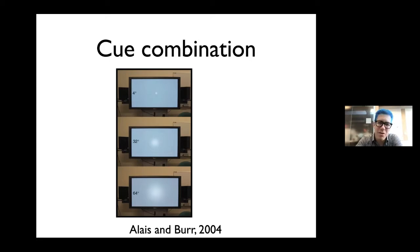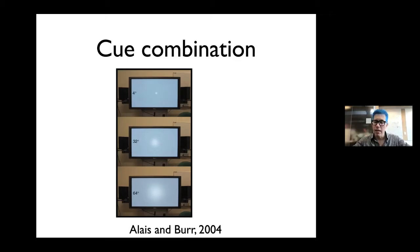I first want to remind you of the kind of phenomena that we modeled yesterday. Here's the Alais and Burr paper, which is a really cool setup. They show a little visual stimulus — it flashes on the screen — and then you also hear a sound. If you hear a sound, your localization might be precise to maybe 30 degrees or so.